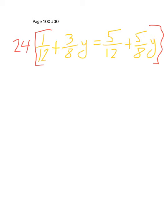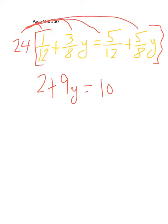And this is what you get. Let's see. 24 times 1 is 24. 24 divided by 12 is 2. 24 times 3, that's 72. 72 divided by 8 is 9. 24 times 5, that's 120 divided by 12 is 10. And 24 times 5 is 120, divided by 8 is 15. So you can see, going from step 1 to step 2, after multiplying by the common denominator, all the fractions are gone. So in my opinion, it makes the problem a lot easier.